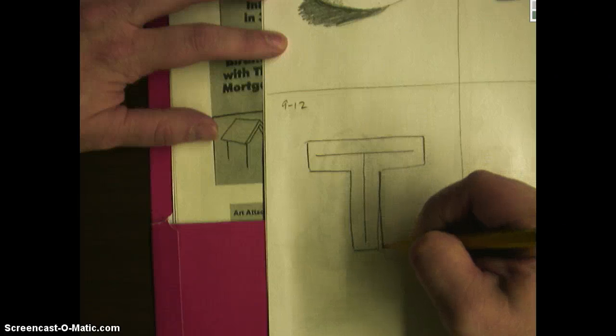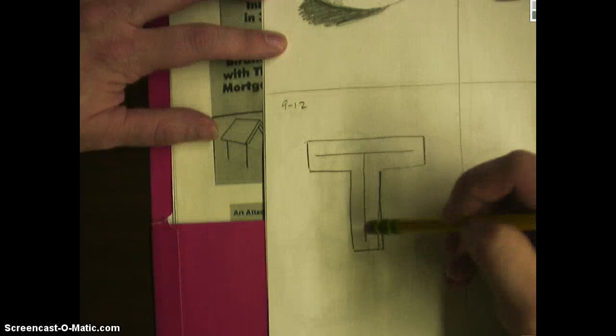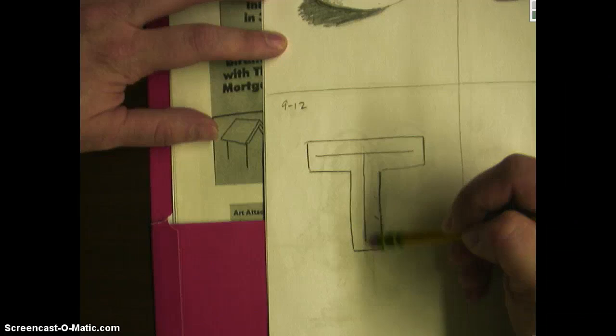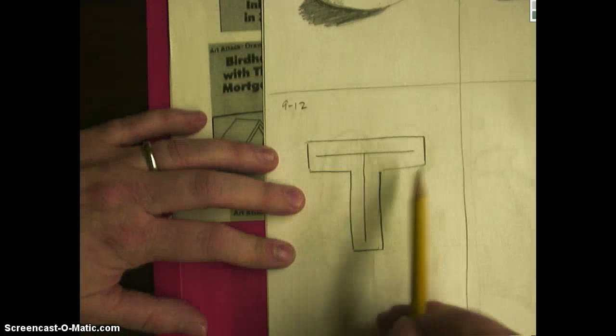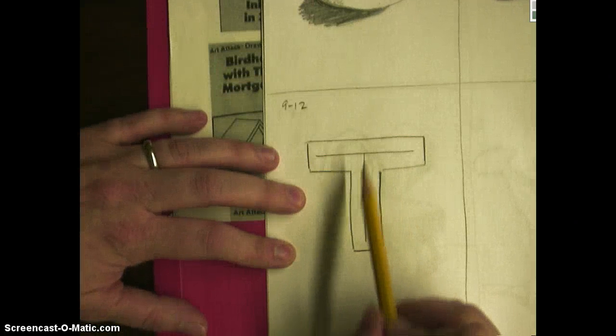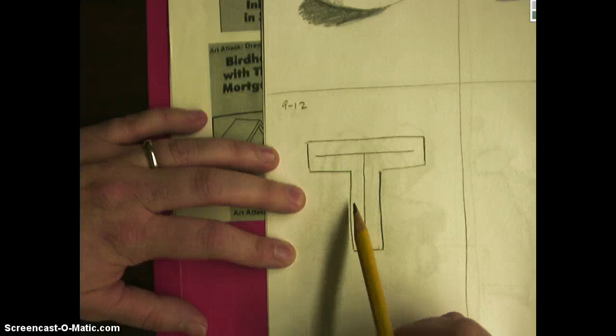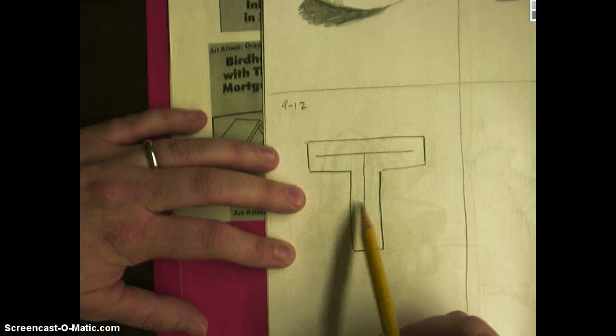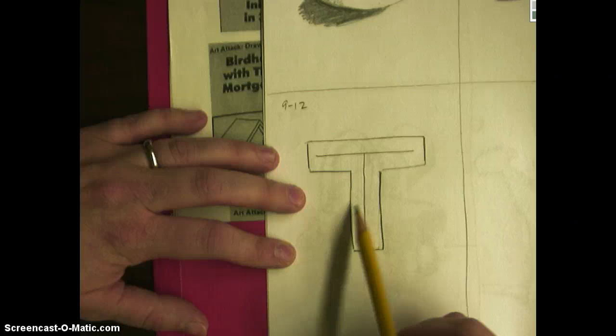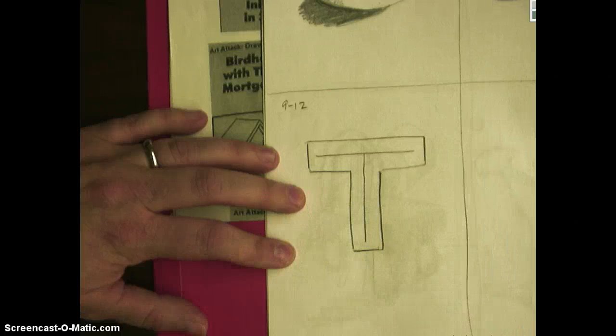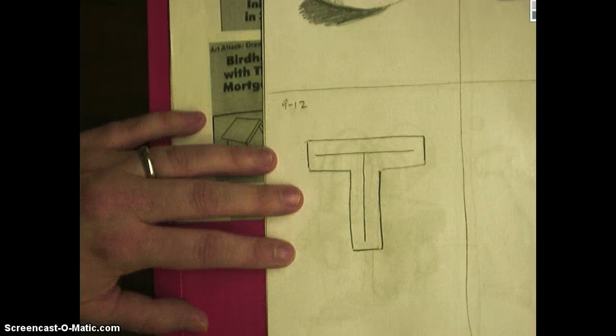Try to make sure that when you're drawing these lines that they're straight and that they're even. You want to try to keep the space between each part of the stick even. So this side should be the same size as this side over here. Try to get as close as possible.